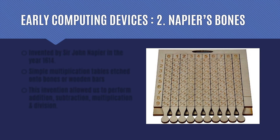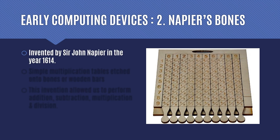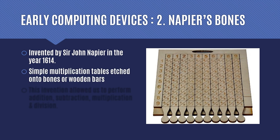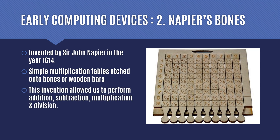The next invention is Napier's Bones, which you can see on your screen. These were multiplication tables etched onto bones or wooden bars. It was developed by Sir John Napier, a mathematician, in the year 1614. This invention allowed mankind to perform calculations like addition, subtraction, multiplication and division by manipulating these sticks and bars.